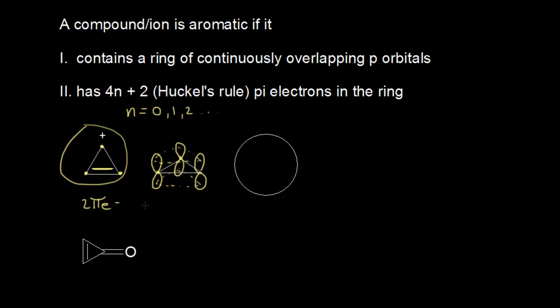I know that p orbitals are atomic orbitals, so I have a total of 3 atomic orbitals. According to MO theory, those 3 atomic orbitals are going to combine to give me 3 molecular orbitals. I can analyze the relative energy levels of those molecular orbitals using what's called a frost circle. I'm going to start by drawing a line to divide my circle in half, which divides my bonding from my antibonding molecular orbitals.